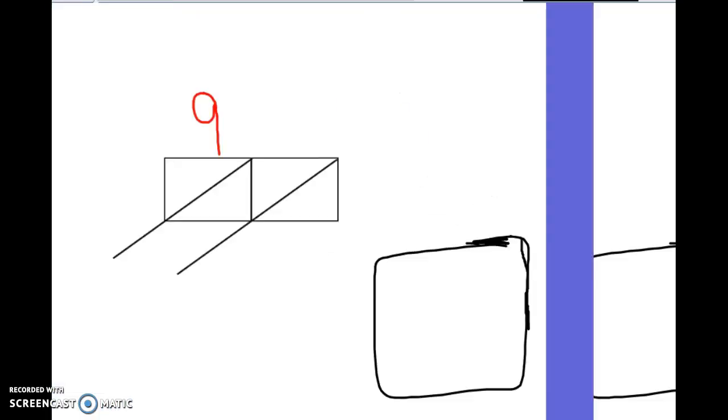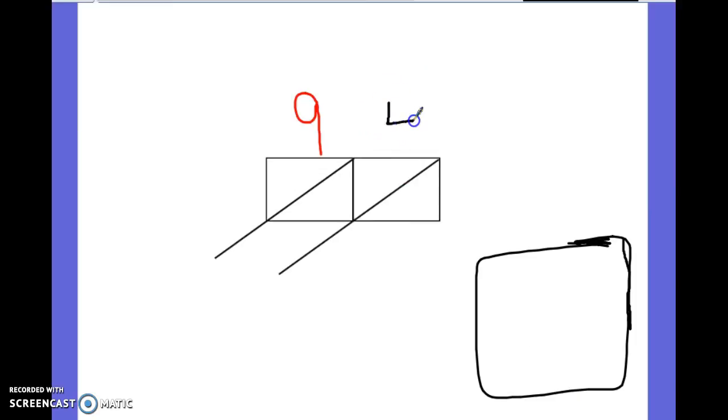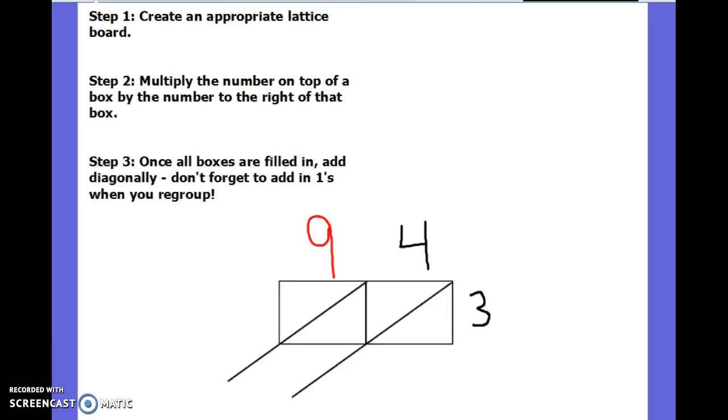So, let's take an example like 94 multiplied by 3. This is an appropriate lattice board. In other words, it's step 1. Let's turn back to those steps. Step 1 is creating an appropriate lattice board. In this case, because I have a two-digit number, I have to have a rectangular box, which students are allowed to use lined paper for. We showed them how to use that here in school, to create a rectangular box separated by two different squares.